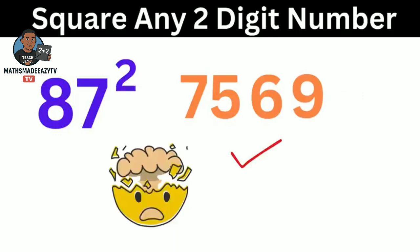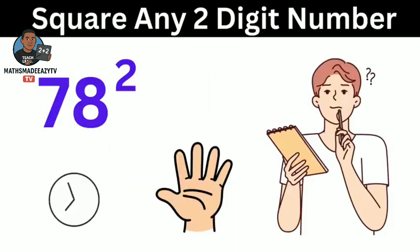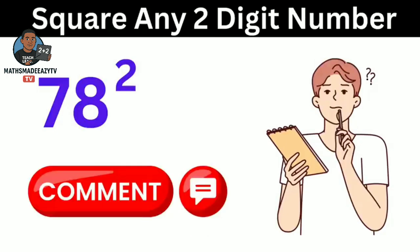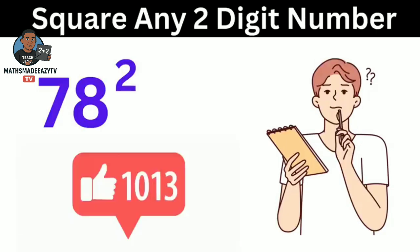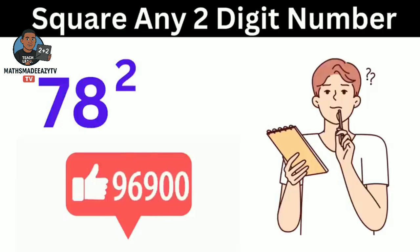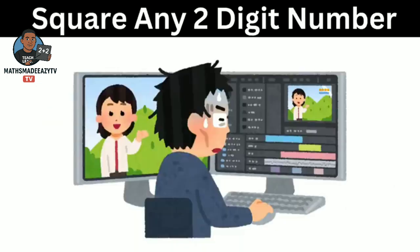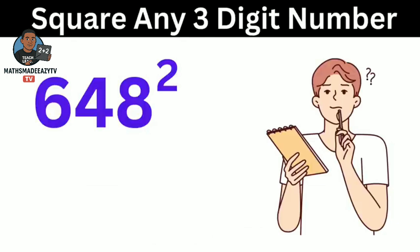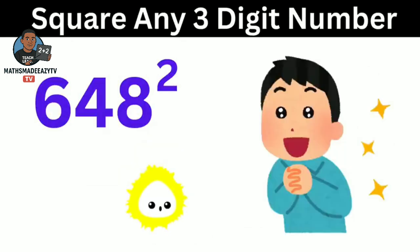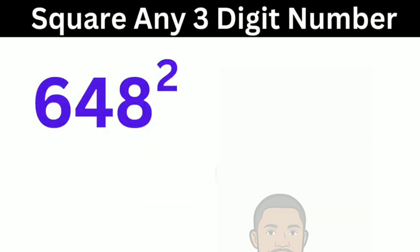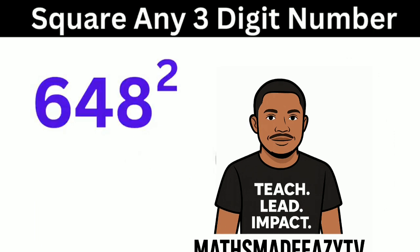Isn't this out of this world? See how quickly we have been able to find the square of any two-digit number with this trick. Now can you find the value of 78 square in 5 seconds? Let me know your answer in the comments. Also, if I get up to 20,000 likes for this video, then I will make another video showing you how to square any 3-digit number with lightning speed, which will be so much fun. See you next time.